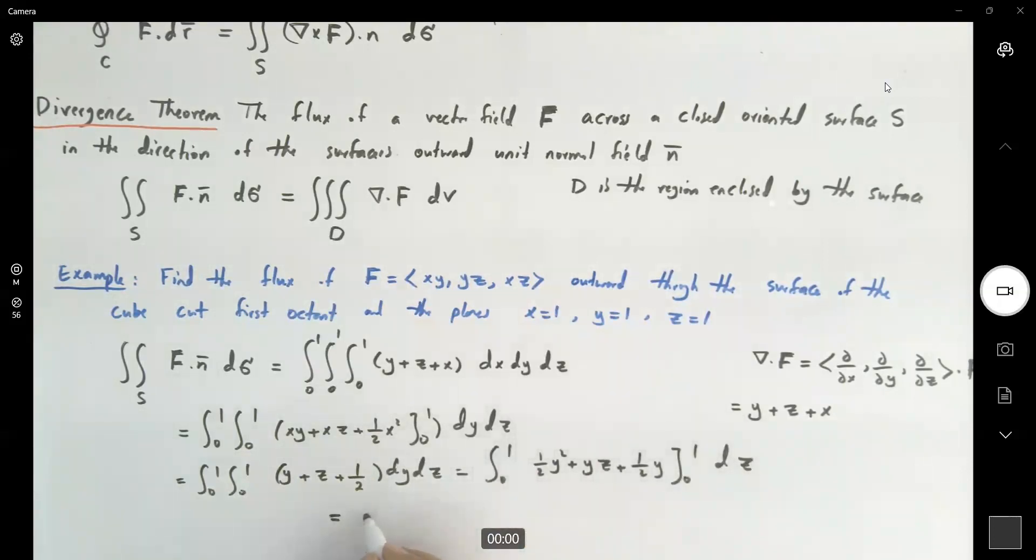This guy is equal to a half plus z plus a half, or 1 plus z dz, 0 to 1. So you get z plus a half z squared, 0 to 1, 1 plus a half, which is 3 halves.